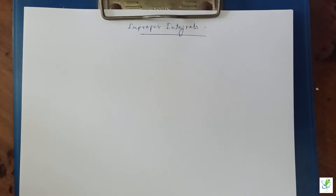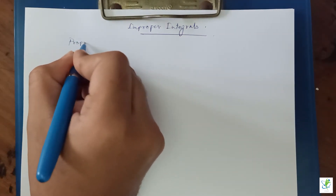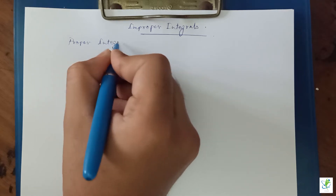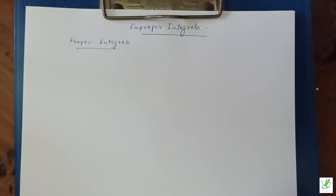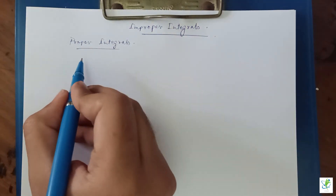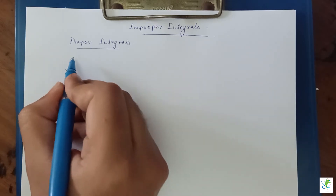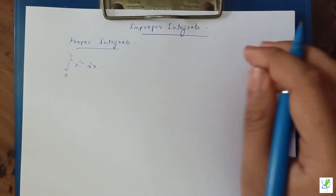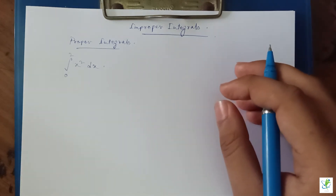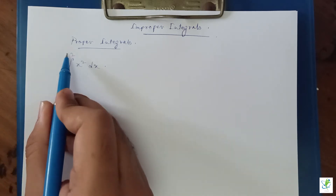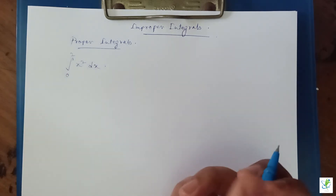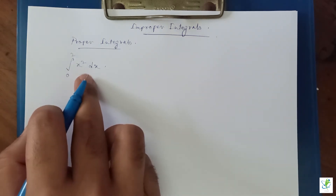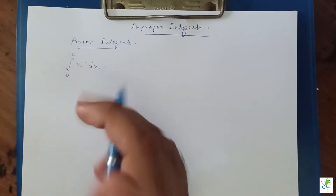Welcome to my channel. In this video we are going to learn about improper integrals. But before understanding improper integrals, let us talk about proper integrals first. So basically, if an integral is given — for example, integration from zero to two of x squared dx — you can see that both limits are bounded or finite. This kind of integral is known as a proper integral.